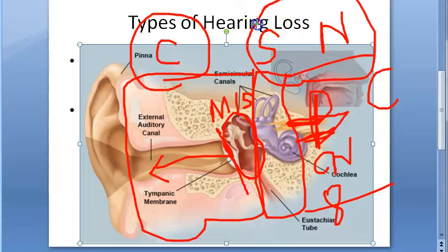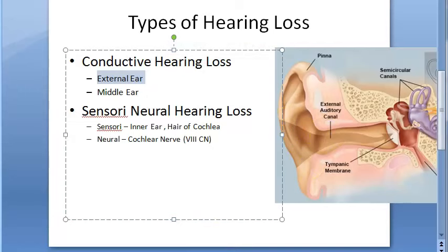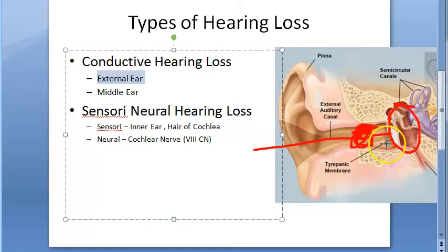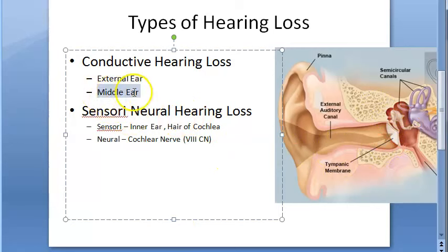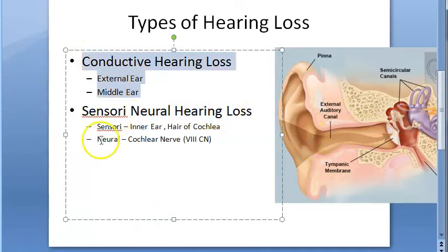For conductive hearing loss, in the external ear there can be wax buildup or a foreign body blocking the conduction of sound. In the middle ear, the ossicular chain can be disrupted, or the tympanic membrane may be perforated. Some individuals congenitally won't have proper development of these structures, which can also cause conductive hearing loss.